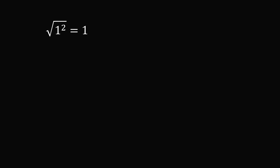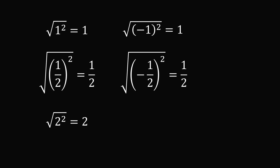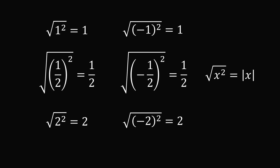Applying this principle: the square root of 1 squared equals 1; the square root of the square of 1 half equals 1 half; the square root of 2 squared equals 2. But the square root of (negative 1) squared equals positive 1. Whenever we take the square root of the square of a negative number, we get the opposite of that negative number. The general rule is: the square root of x squared equals the absolute value of x.